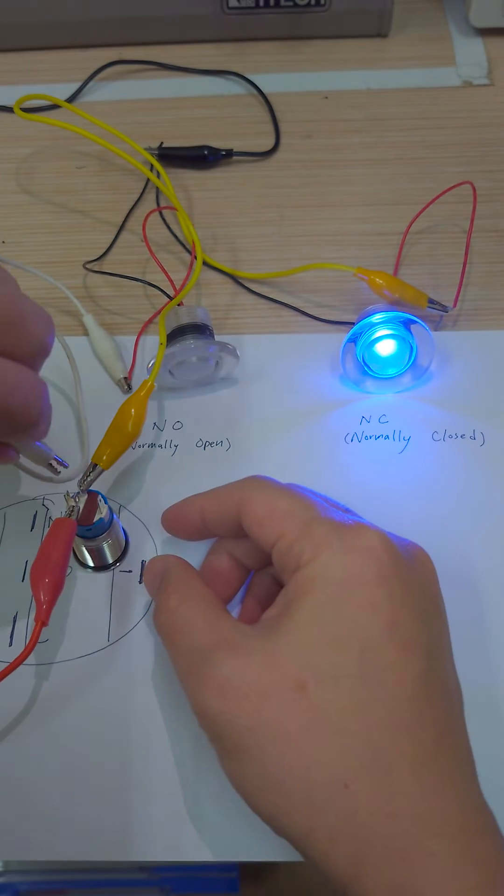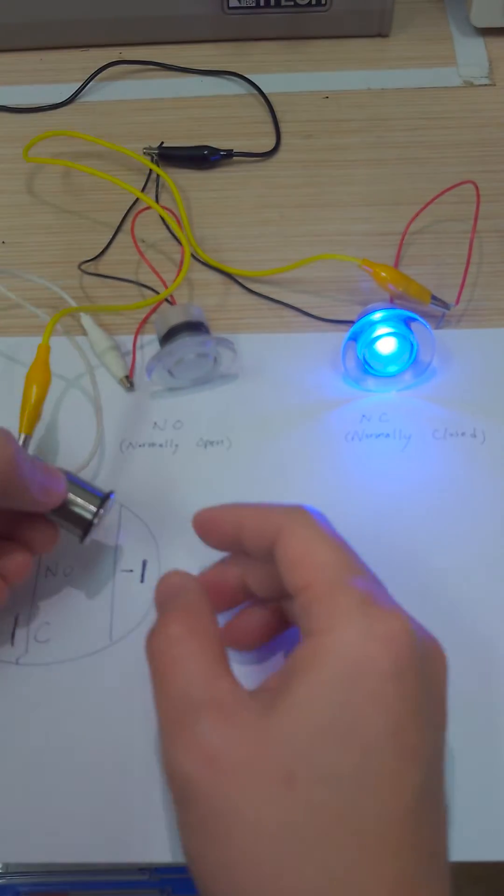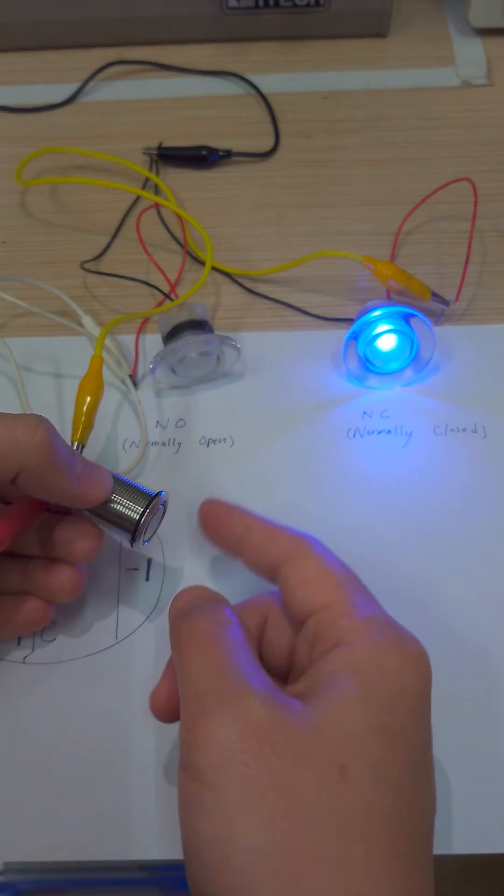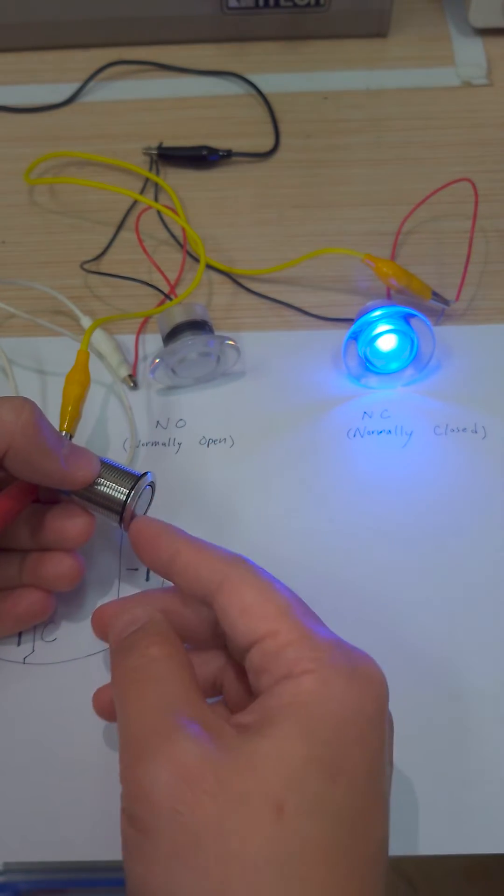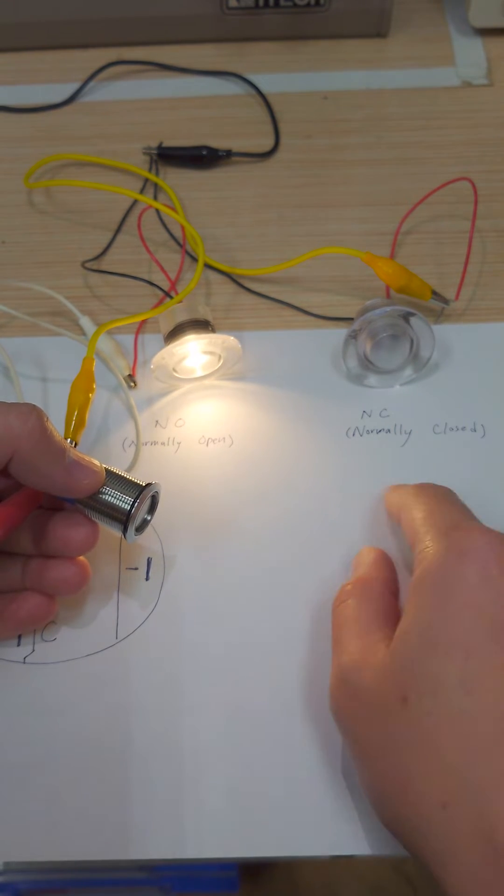I will connect the white cable to the NO port. When the switch is not pressed, it's off. When pressed, it's on. When the switch is pressed, the NO will be on and NC will be off.